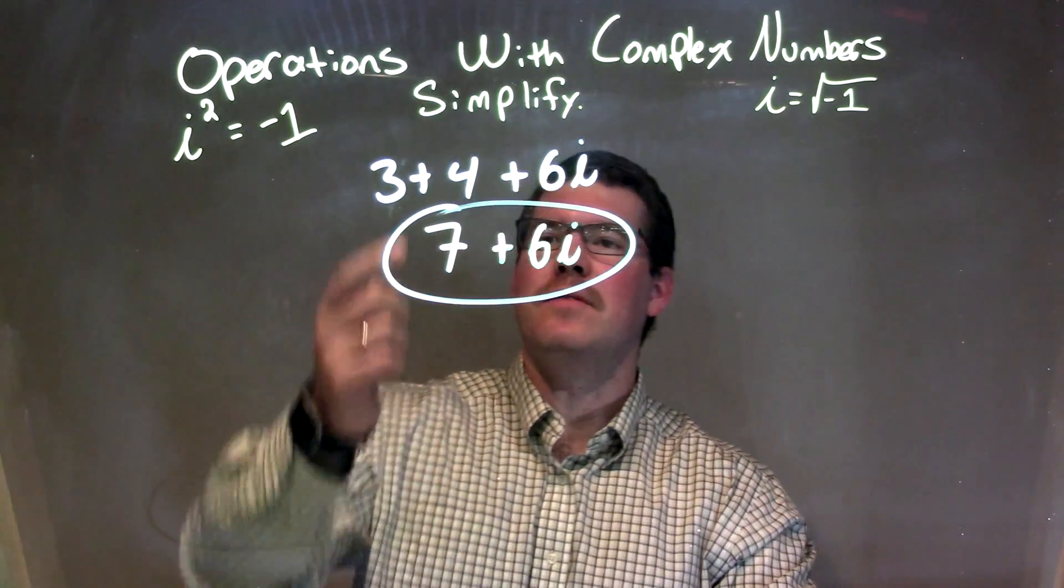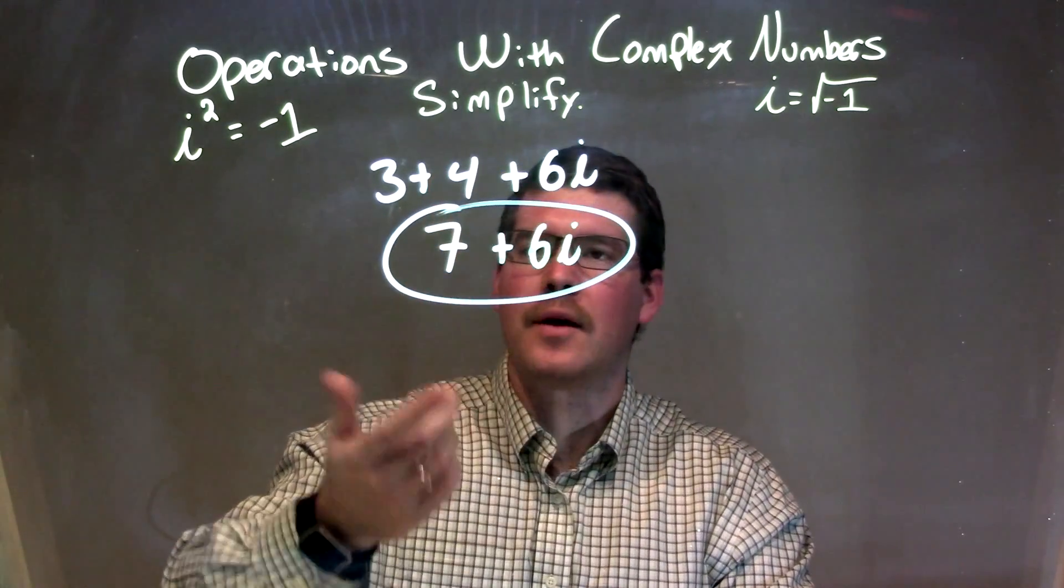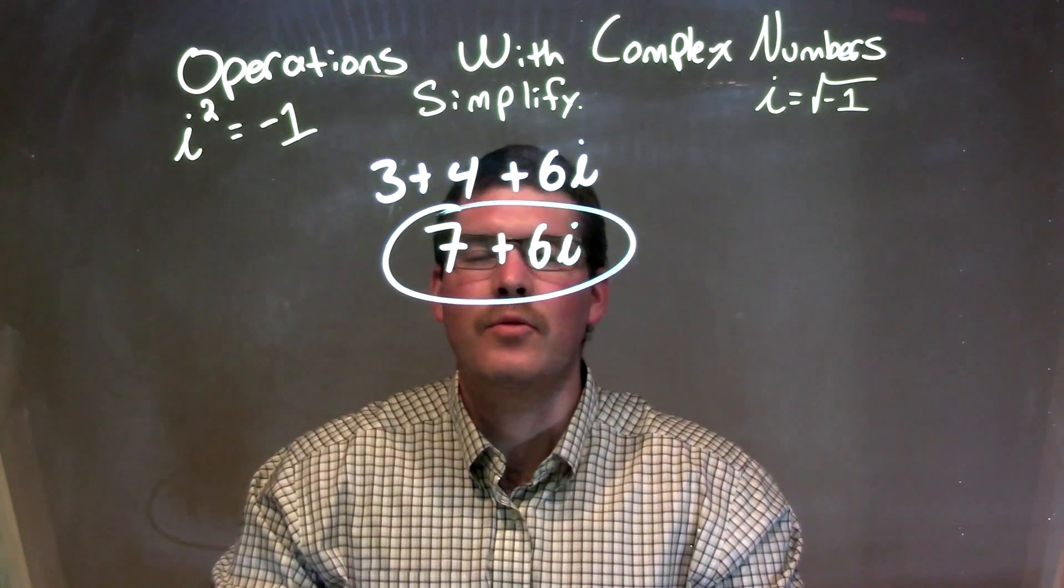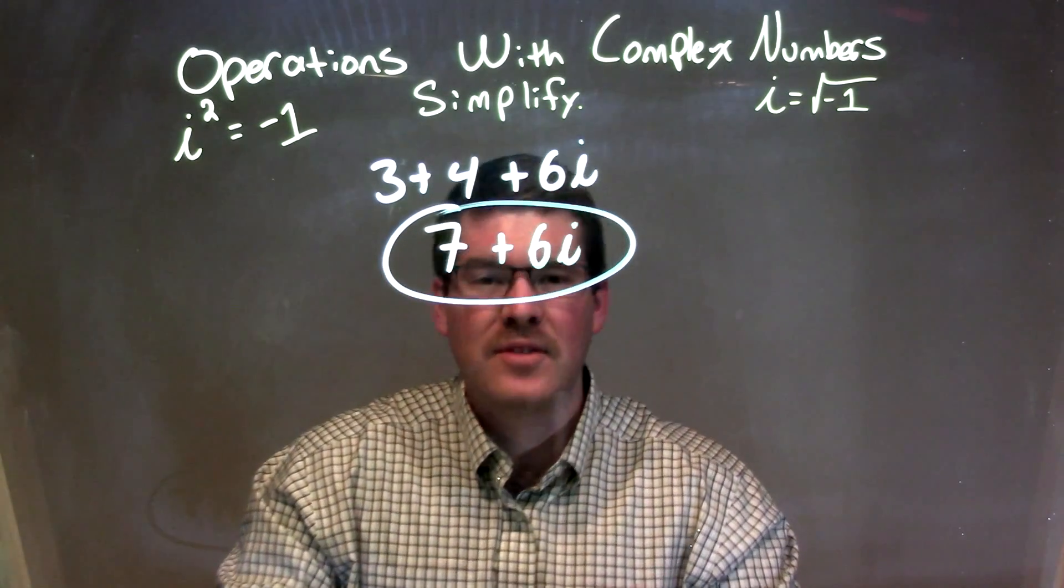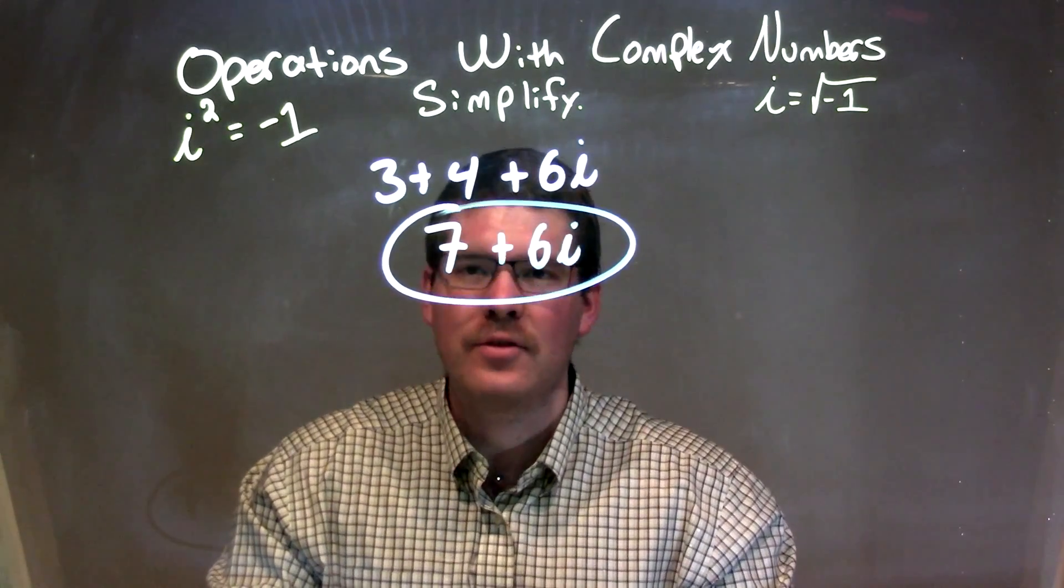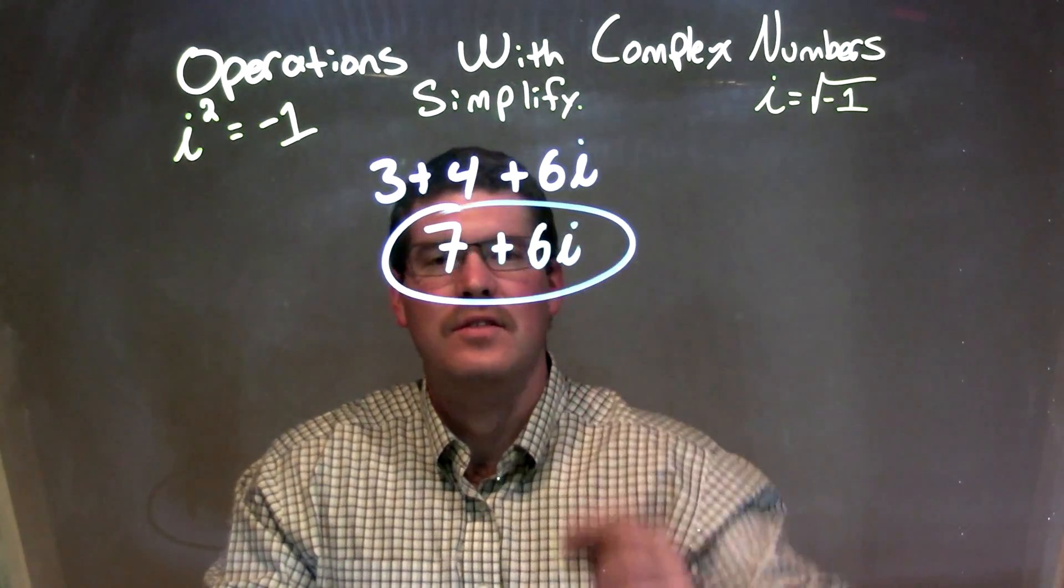Let's recap. We're given 3 plus 4 plus 6i. We want to combine the number parts that we see on the real number line: 3 plus 4 is 7. There's no other i's out there, so there's nothing else to combine. Our final answer is just 7 plus 6i.